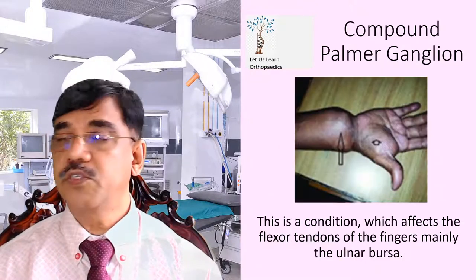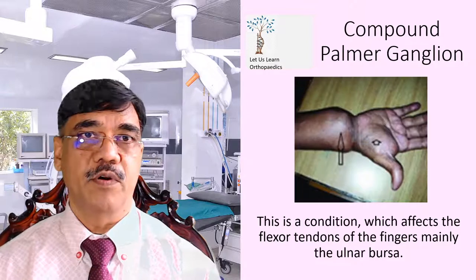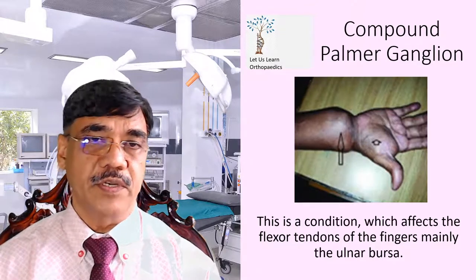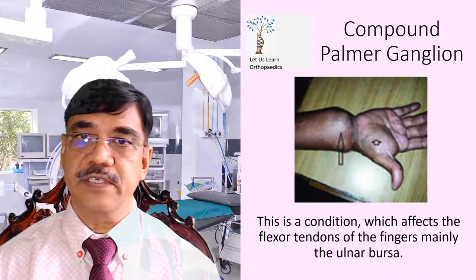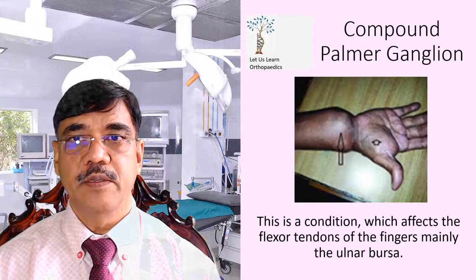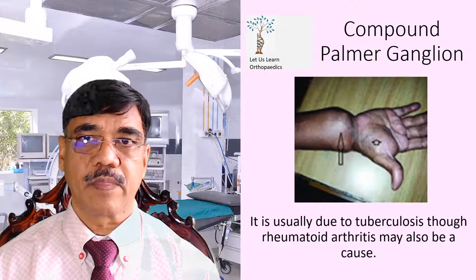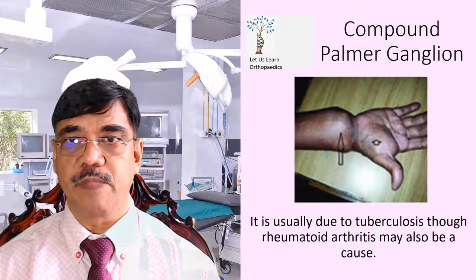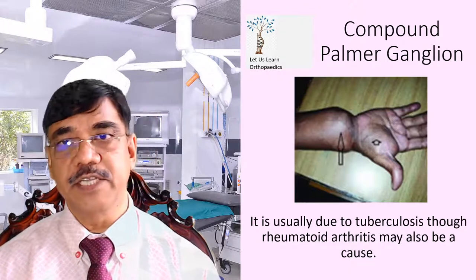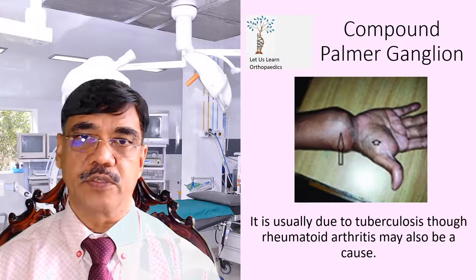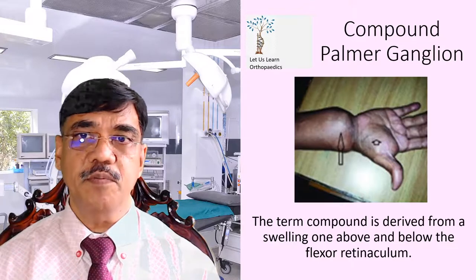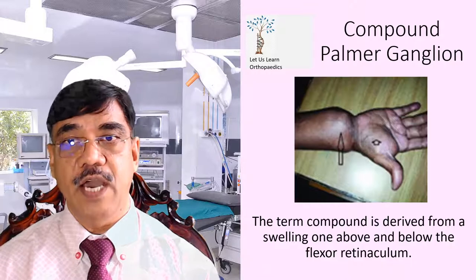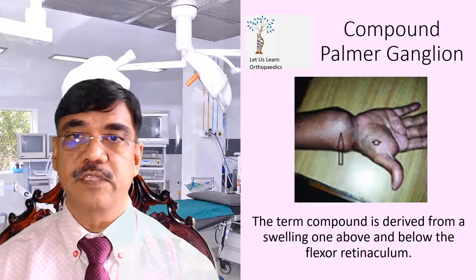Dear students, today we are going to discuss about the Compound Palmar Ganglion. This is a condition which affects the flexor tendons of the fingers, mainly the ulnar bursa. It is usually due to tuberculosis, though rheumatoid arthritis may also be a cause. The term Compound Palmar Ganglion is derived from the swelling one above and below the flexor retinaculum.